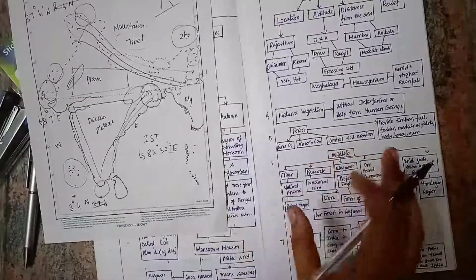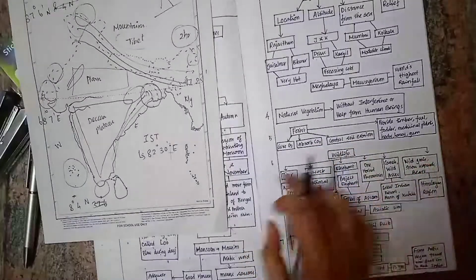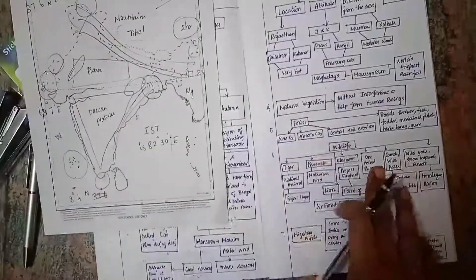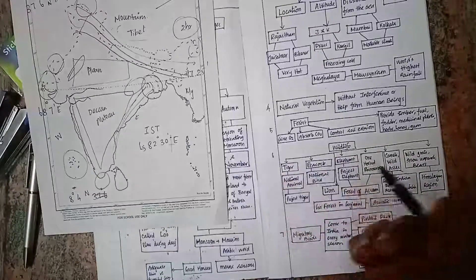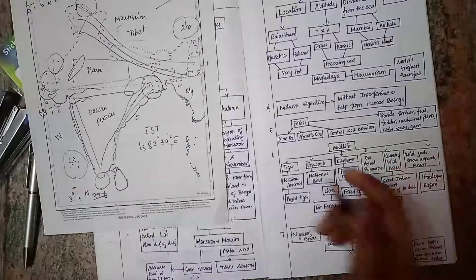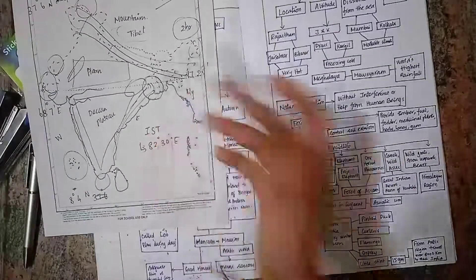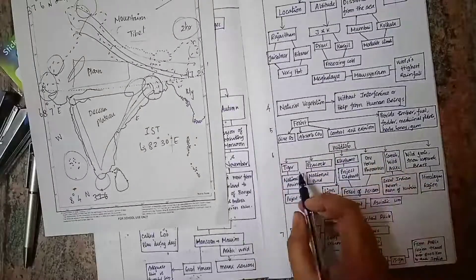The forest is also a home for flora and fauna. For example, the tiger is the national animal seen in our forests. We have Bengal tiger in Sundarbans Delta. Project Tiger is initiated by the government to protect tigers.